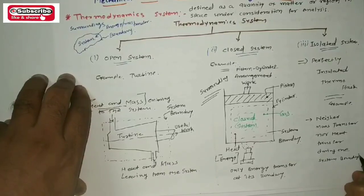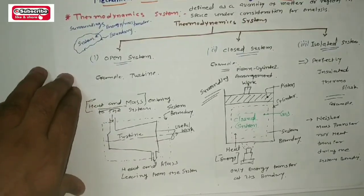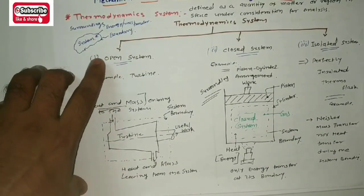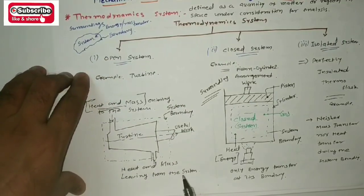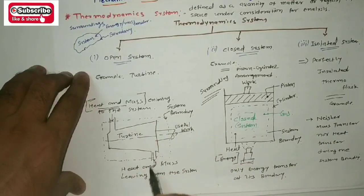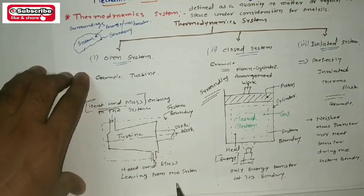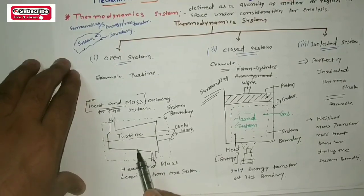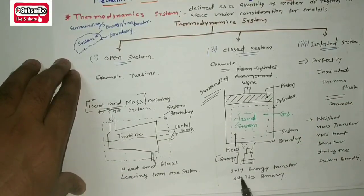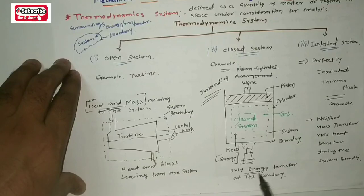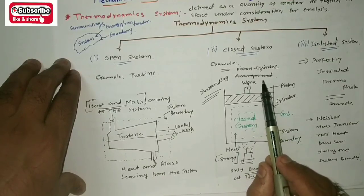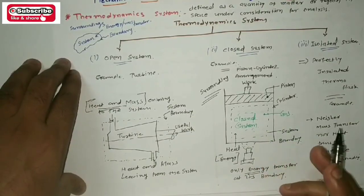In simple terms: in the case of open systems, both heat and mass are transferring — entering and leaving the system. The example is a turbine. In the case of closed systems, only energy is transferred at its boundary regions, so the example is the piston-cylinder arrangement of an IC engine.